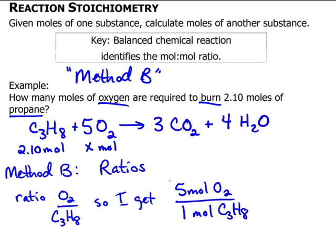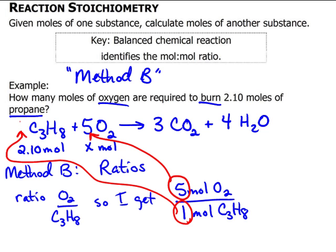This 5, let's see if I can circle it, came from right there. And this 1 came from right here, that implied 1 out in front. So that is the balanced chemical equation. Now, let's look at how to interpret this.